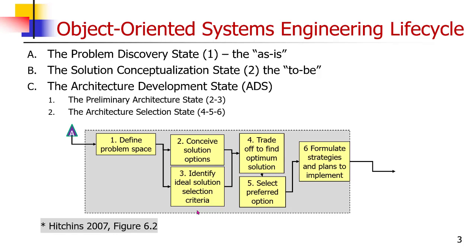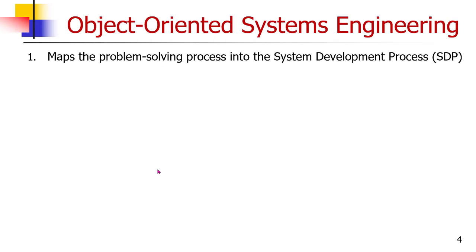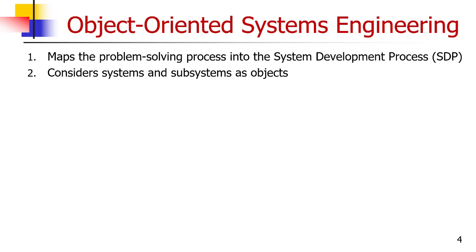And then we formulate the strategies and plans to implement them. So by the time we get to the end of the front end, we know exactly what system and subsystems we're going to build — and that's the rest of the system development process. So object-oriented systems engineering maps the problem-solving process into the system development process and considers systems and subsystems as objects.